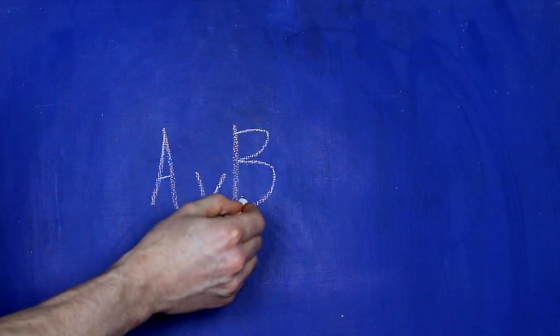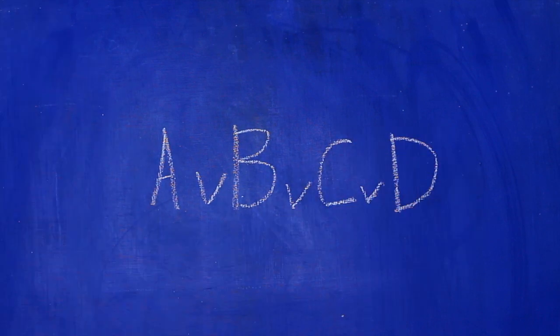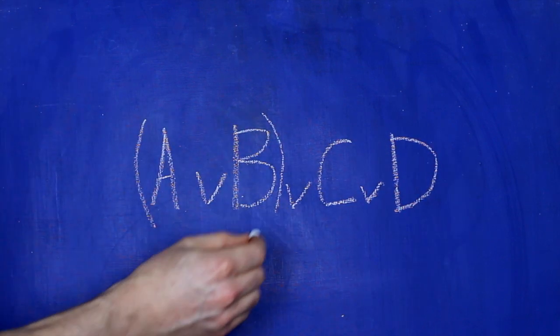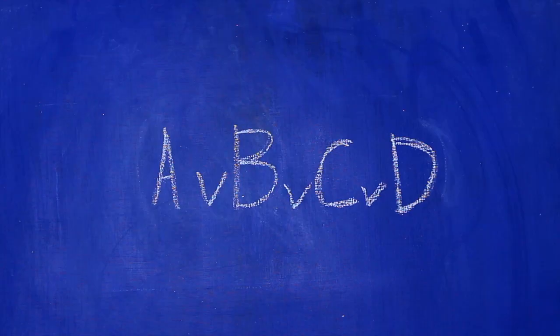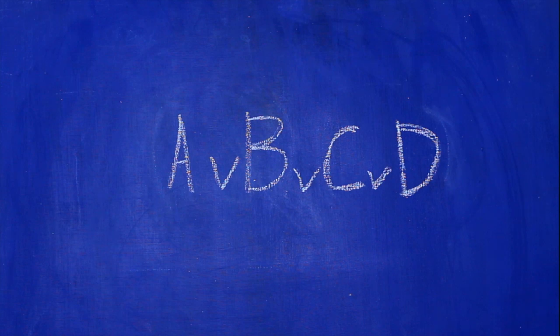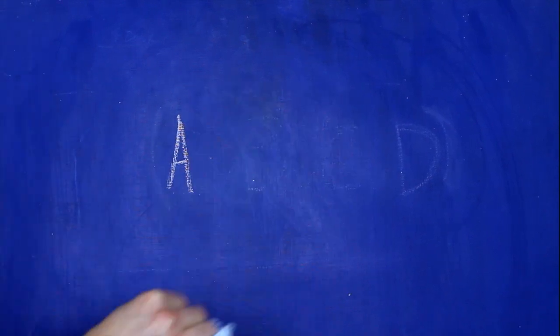Look at this sentence here. Because disjunction is associative, it doesn't matter where we put the brackets in. Wherever we put them, we'll end up with an equivalent sentence. So let's go ahead and call this sentence here a disjunction that has four disjuncts. We can talk about disjunctions with any number of disjuncts: four disjuncts, three disjuncts, two disjuncts, and even as a limiting special case, just one disjunct.